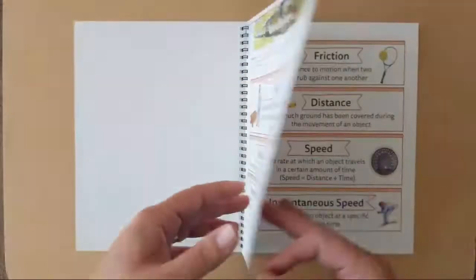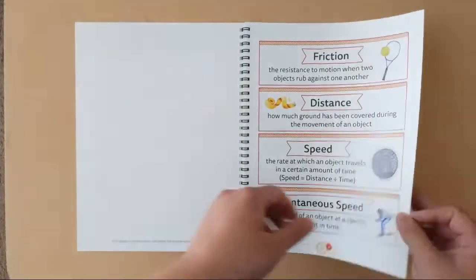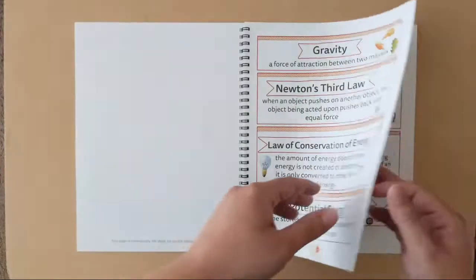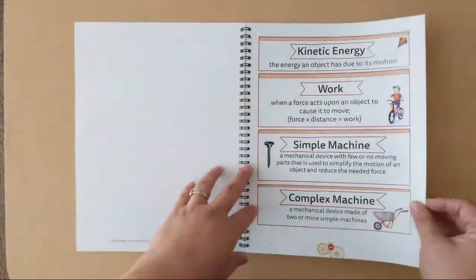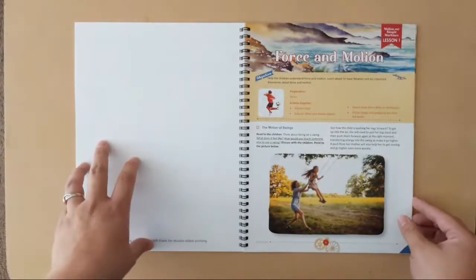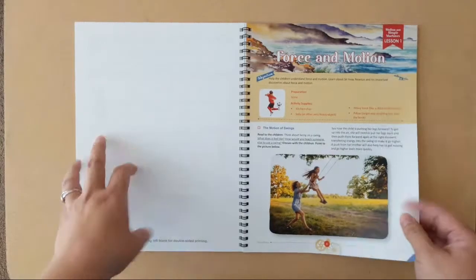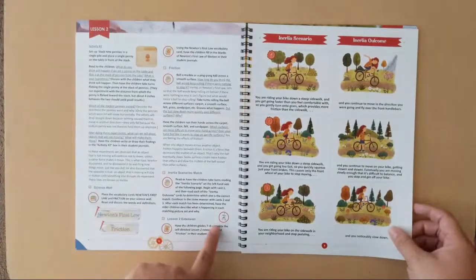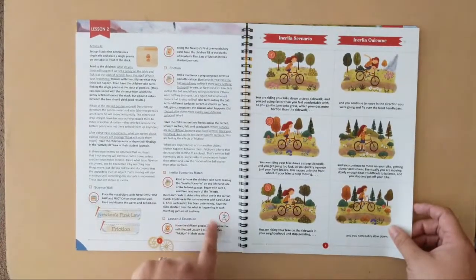All right, vocabulary words. We tend to leave ours in the book rather than put it on a science wall and then I just put a little tab on the word we're at and we review them each lesson. Okay, here's the first lesson. Here's your little notes where it tells you to go to the lesson extension.